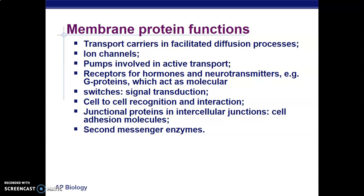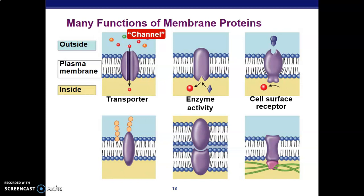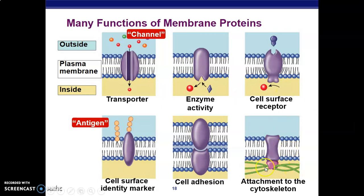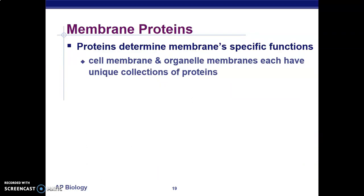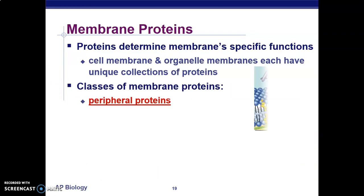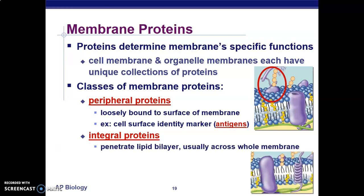Membrane proteins can act as transporters, second messengers with enzymatic activity, cell surface receptors, cell surface identity markers such as antigens and cell adhesion molecules, and sites for cytoskeleton attachment inside the cell — the cytoskeleton ensures the shape of the cell. Membrane proteins determine the specific functions of the cell. Peripheral proteins are loosely on the surface — antigens are a good example — while integral proteins span through the lipid bilayer and act as channels or pumps for transport.